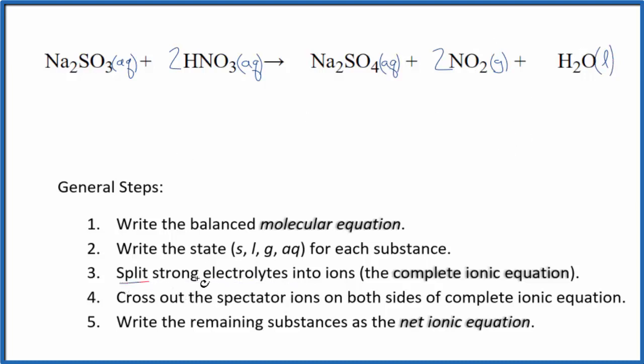Now we can split the strong electrolytes into their ions to give us the complete ionic equation. Sodium is in group one on the periodic table, so it's one plus. The sulfite ion has a two minus charge. We have two sodium ions, so 2Na+. I won't write the states each time; we'll do that at the end. Plus the sulfite ion, SO3^2-.